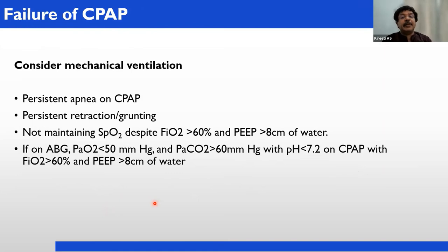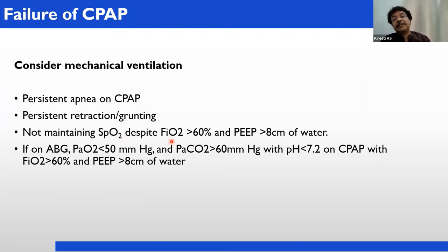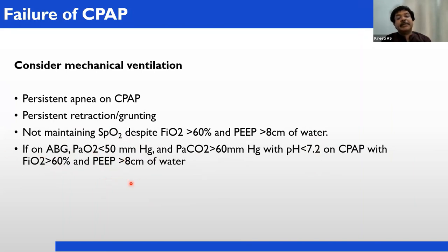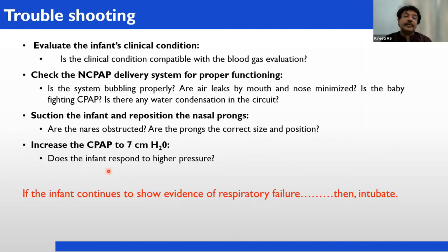When is CPAP a failure? Persistent apnea on CPAP, persistent retraction and grunting even with maximum CPAP level, no improvement in chest retractions, saturation not maintained despite FiO2 going to more than 60% and PEEP going to 8 centimeters. If ABG shows PaO2 less than 50, PaCO2 more than 60, pH less than 7.2 (acidosis), and FiO2 requiring more than 60% and PEEP more than 8 centimeters — then CPAP is failure. Disconnect CPAP and connect the baby to mechanical ventilation.